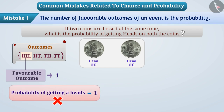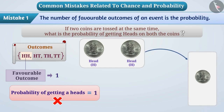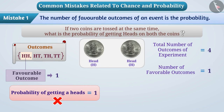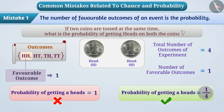This is a misunderstanding. The correct understanding is that the total number of outcomes of the experiment for the event of tossing two coins is 4, and the number of favorable outcomes for the event of obtaining heads on both coins is 1. So, the probability of getting heads on both coins is 1 out of 4, i.e. 1/4.